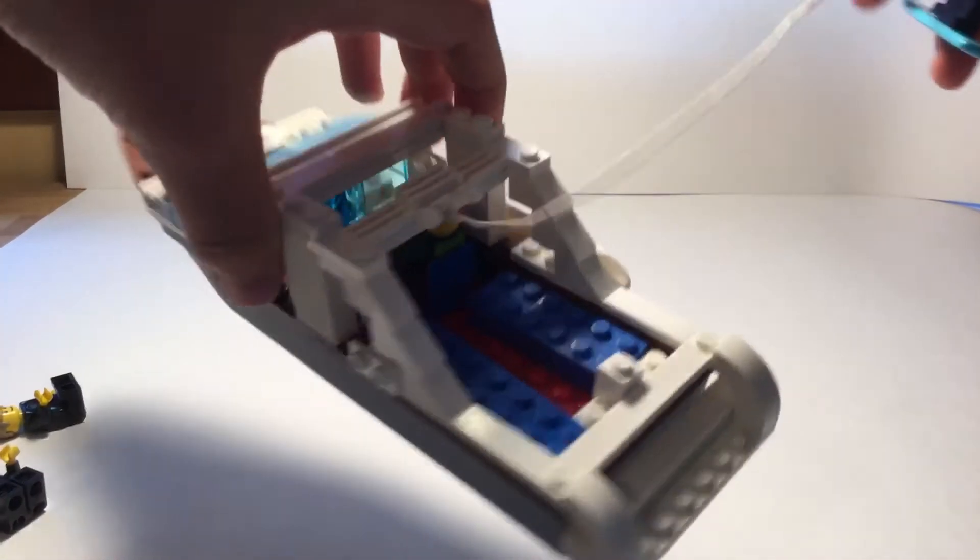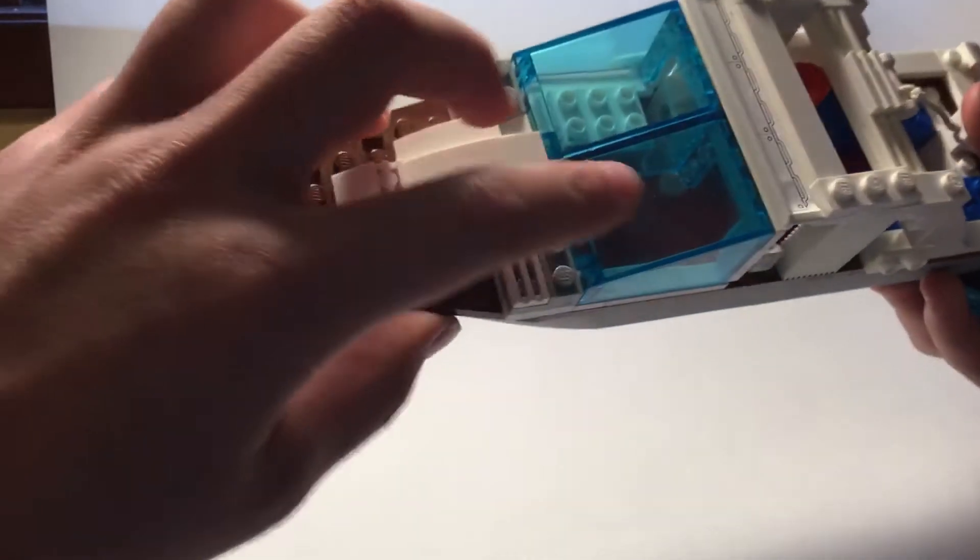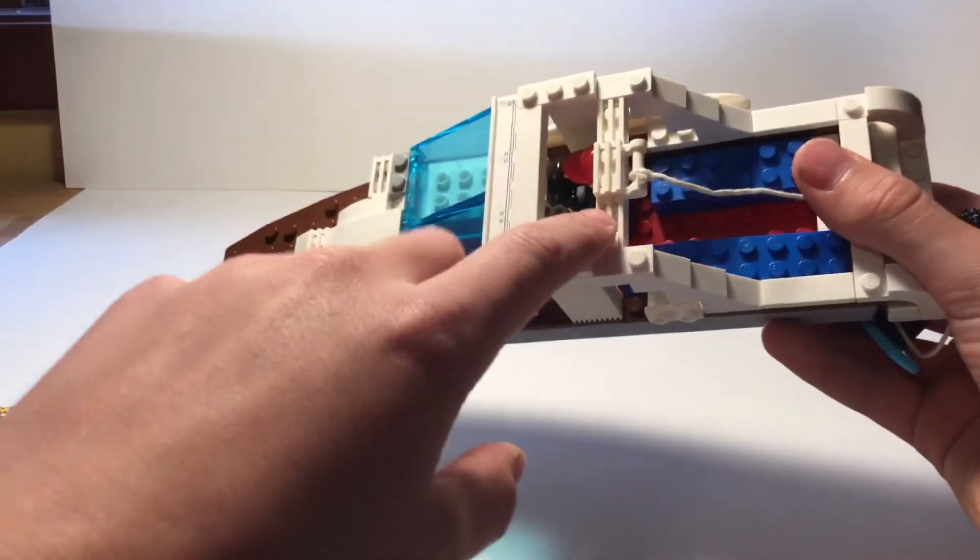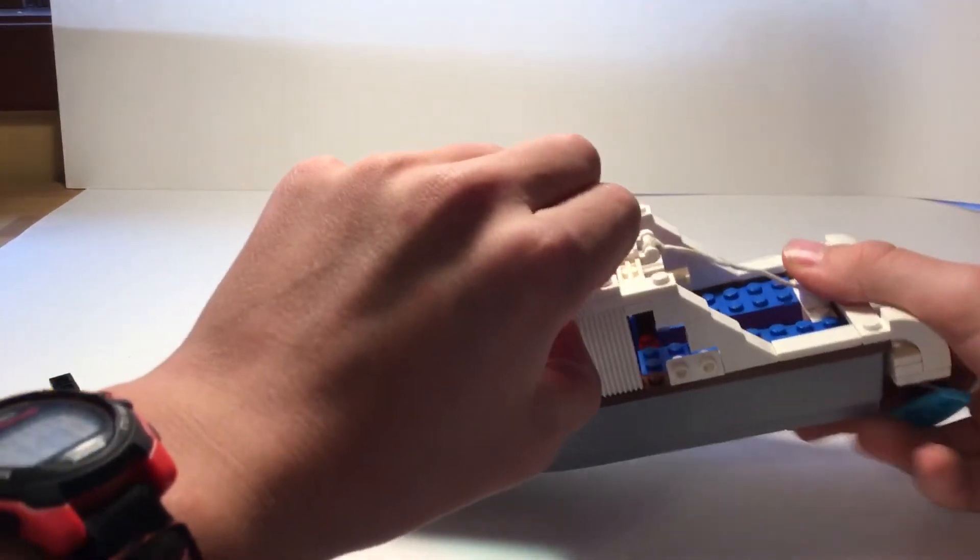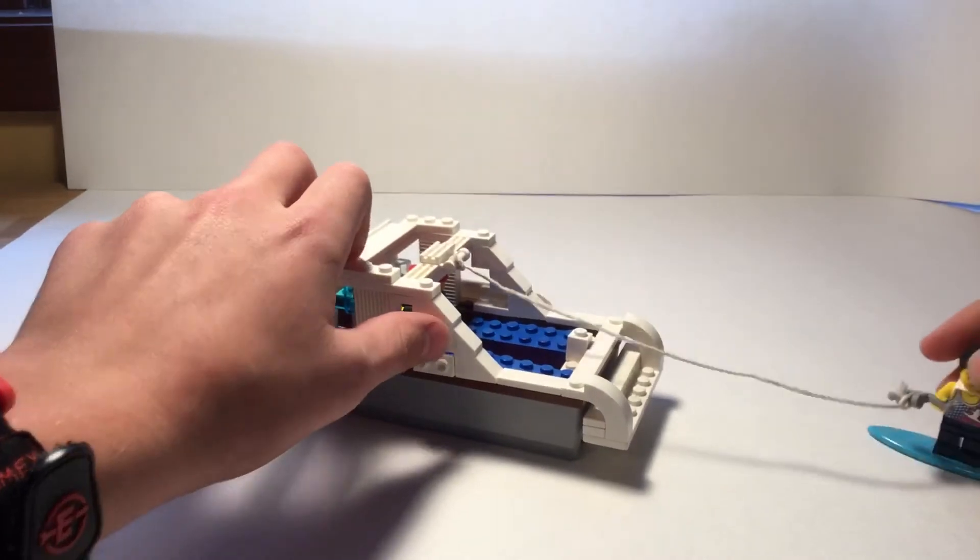And then on the inside we have a fridge back there right in front where you can see. Then we have the driver's seat. This is the boat hull from my Lego boat which is my third video I believe.